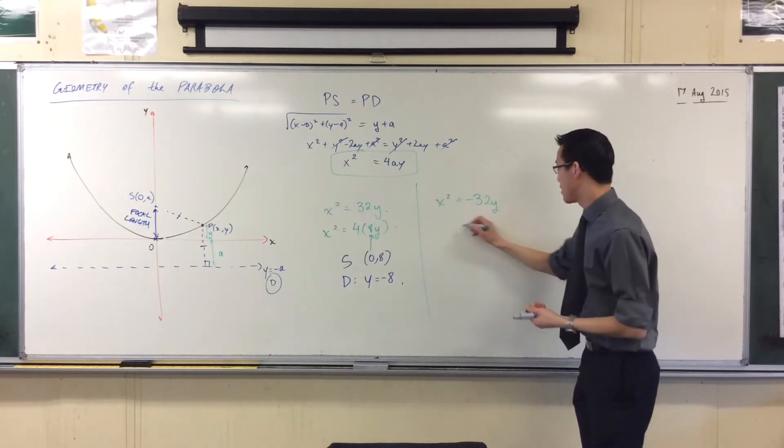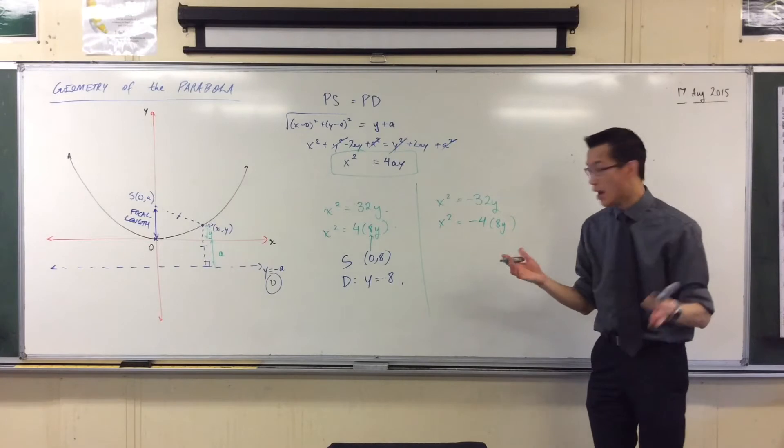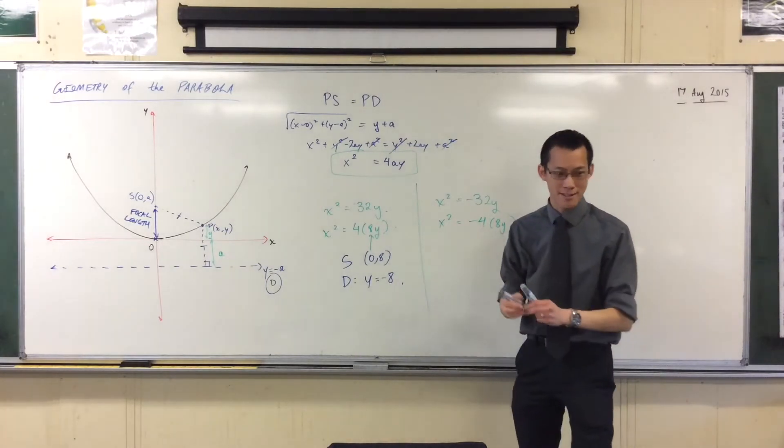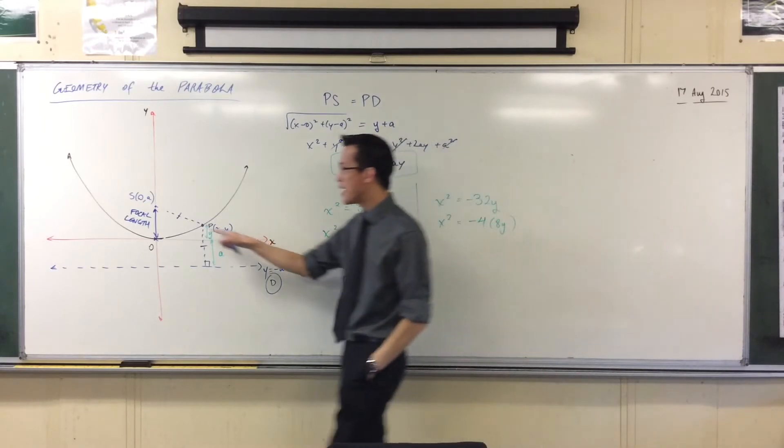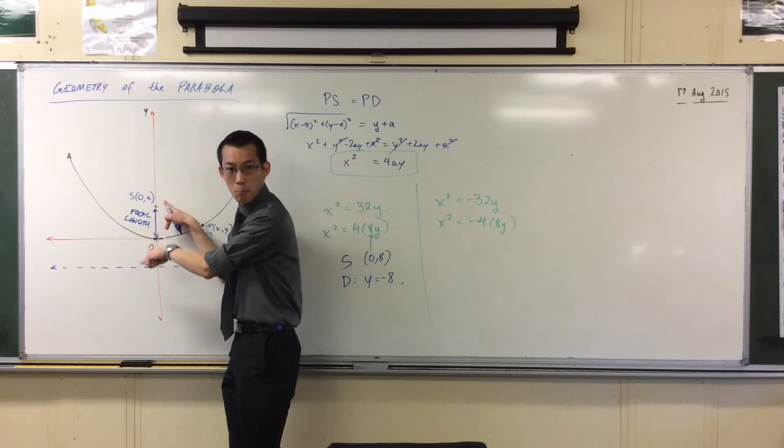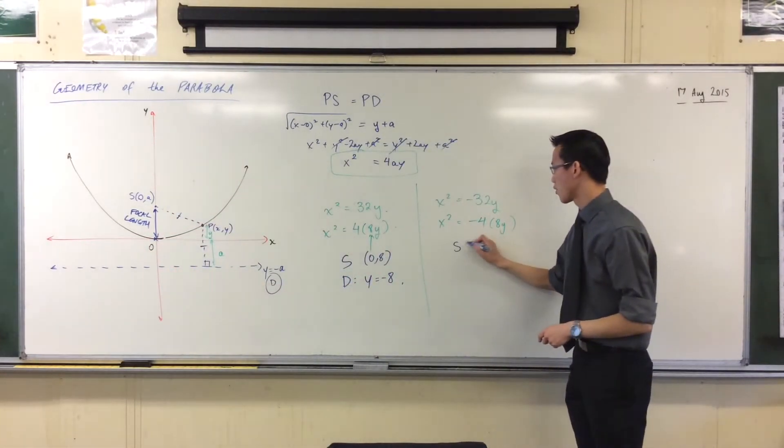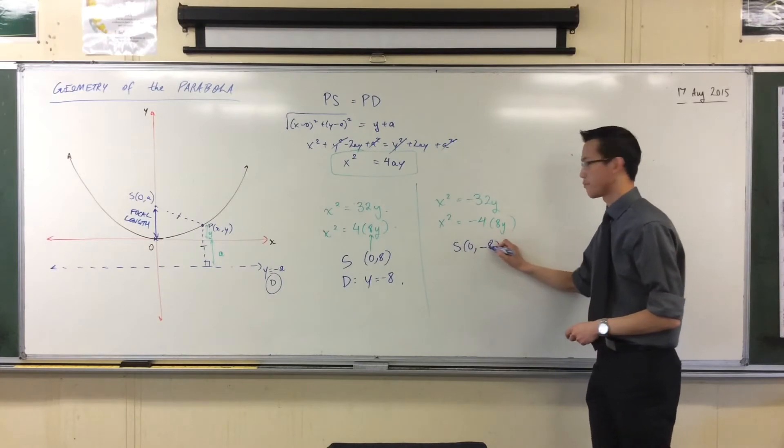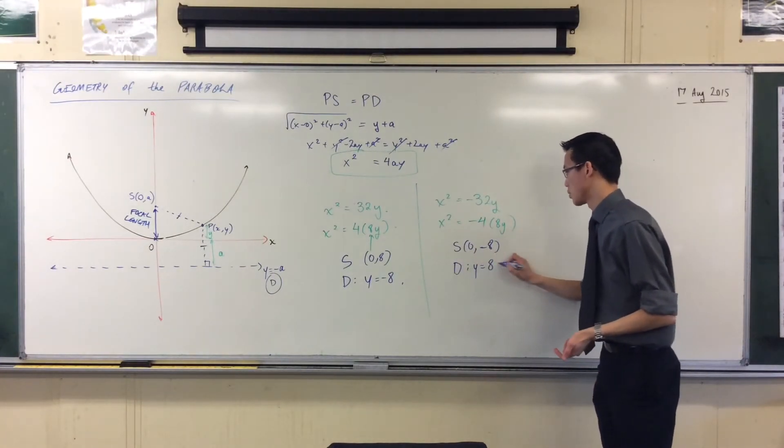That's going to mean I'll rewrite this like so. x squared equals negative 4, 8, y. Now what does this mean, though? I still have the same length that I have here, but it's upside down. It's upside down, right? So the focus will no longer be above the parabola. The focus should be below. Because the whole thing is upside down. So I would say the focus is at 0, negative 8. And therefore the directrix will be above at y equals 8.